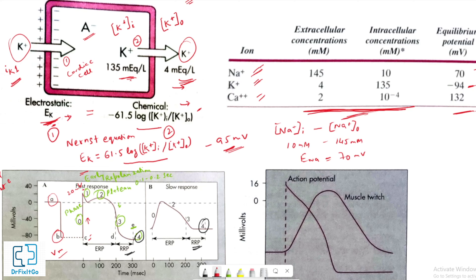However, the actual resting membrane potential of the myocyte is about minus 90 millivolts. Hence, both chemical and electrostatic forces act to pull extracellular sodium ions into the cell. The influx of sodium ions through the membrane is small, however, because the membrane of the resting cell is not very permeable to sodium ions.